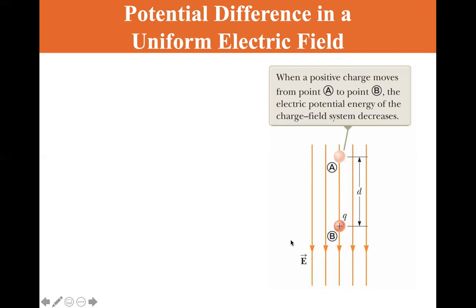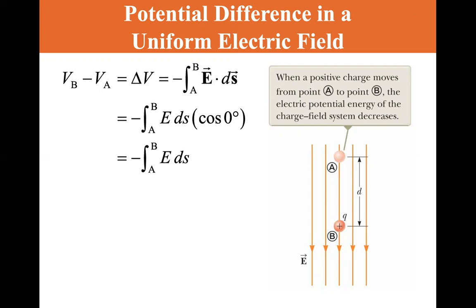Okay, so VB minus VA is equal to delta V, which is equal to minus the integral of A to B of E dot DS, which is the dot product E DS cosine theta. In this case, the theta is zero, so that's equal to minus A to B E DS cosine zero degrees. So you just get minus the integral of A to B of E DS.